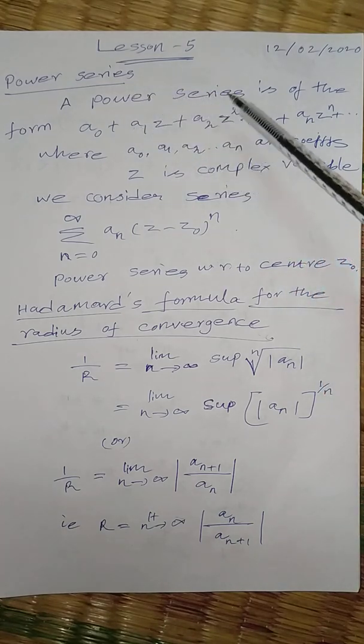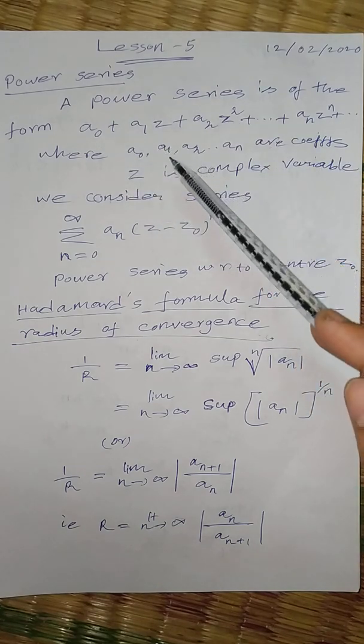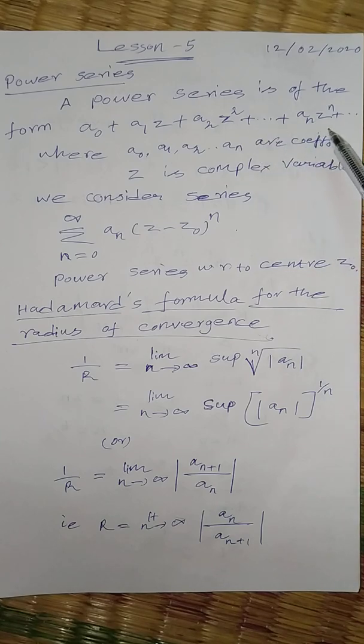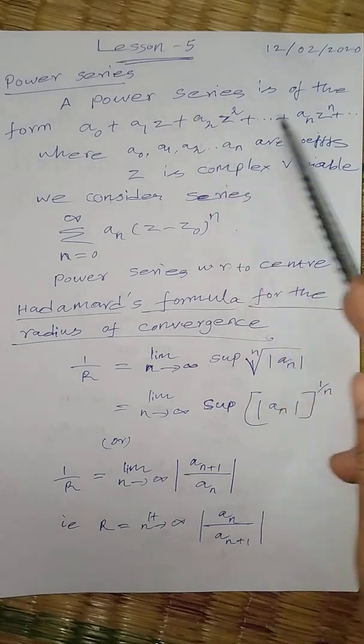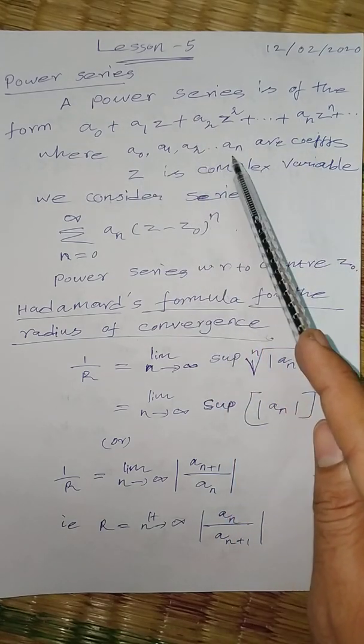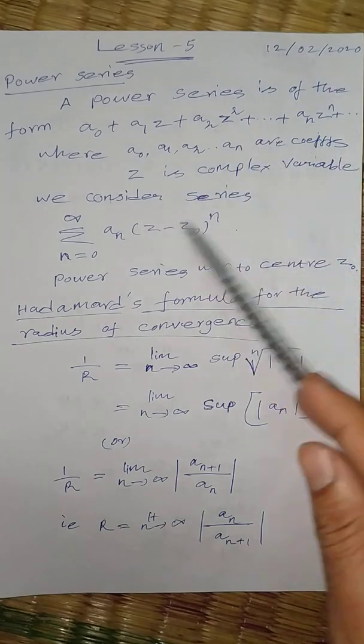Power series. A power series is of the form a0 plus a1z plus a2z square and so on, an z power n. This is the form of the power series where a0, a1, a2, and so on, an are coefficients. z is a complex variable.